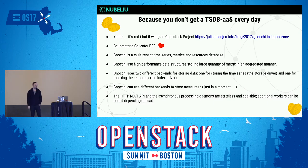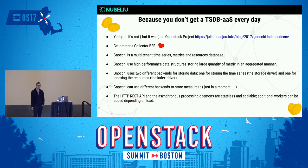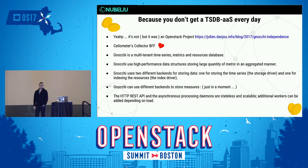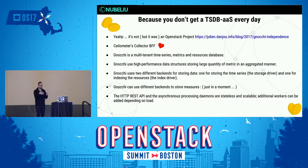Gnocchi is a time series database. A couple of days ago it ceased to be an OpenStack project — I gave you the link about that news. We consider it the Ceilometer collector's best friend. If you're using MongoDB, consider seriously migrating to this backend, which is the one that actually works. It's a multi-tenant time series database where every metric you put into Gnocchi is owned by a specific project, and in the near future, by a project within a specific domain.